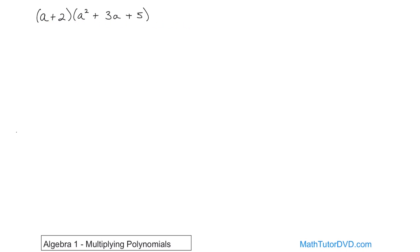Now that you know how to multiply binomials times binomials, how do you think you would do this problem, even if you don't know the rules? At some point you should start seeing patterns in how algebra works. Well, if you cover up the five — if the five wasn't even there, so there were two terms — you already know how to do that. You take a times this and a times that, then two times this and two times that. But now you have a third term, so what do you think you do?